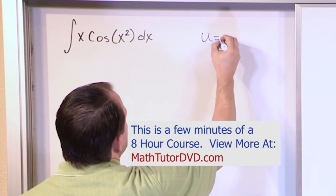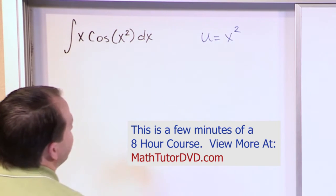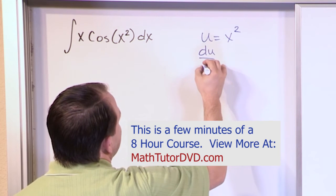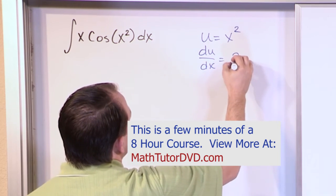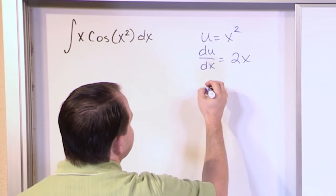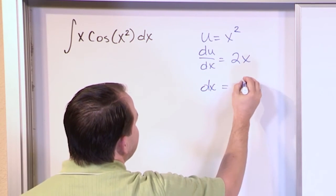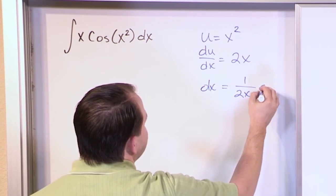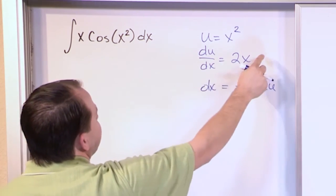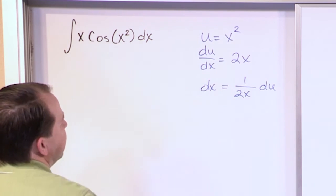I'm trying to give you some experience with what to look for because it's a pretty big clue. What I want to do is set u equal to x squared. The reason I want to do that is because du with respect to x is 2x. We just said that, taking that derivative. And if I solve this for dx, I'm going to get 1 over 2x du. Just move the dx over and the 2x over.